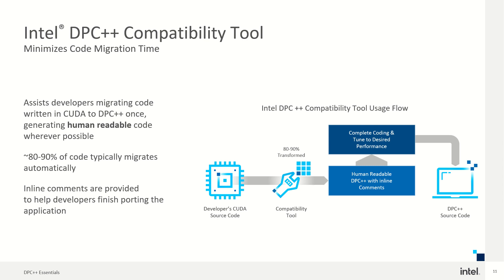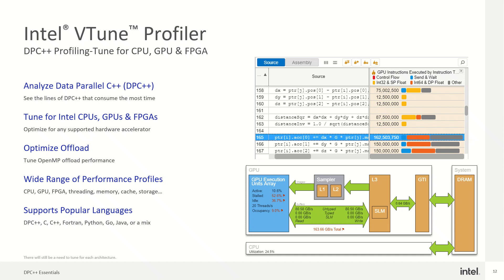VTune Profiler is very important. It provides features for analyzing DPC++ code — you can identify which lines of your DPC++ code are consuming the most time, so you can optimize them further. You can tune performance for Intel CPUs, GPUs, and FPGAs. You can also tune OpenMP offload performance, and a wide range of performance profiles are available for CPU, GPU, FPGA, threading, memory, and cache.